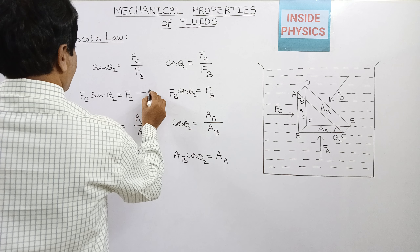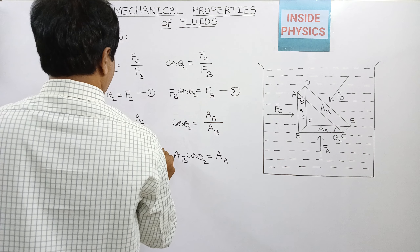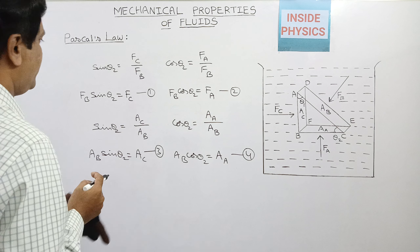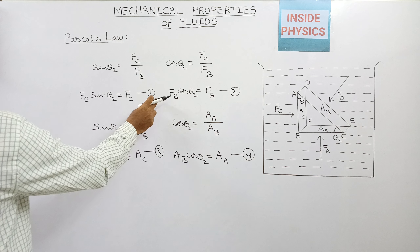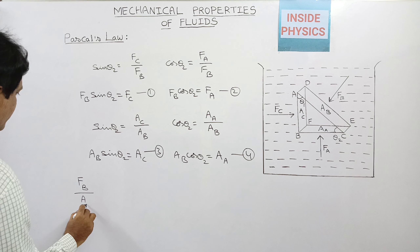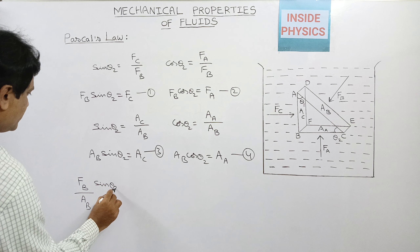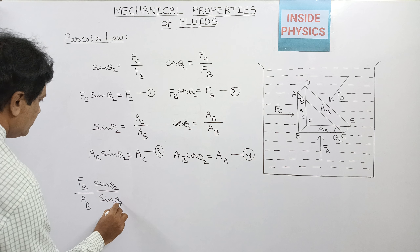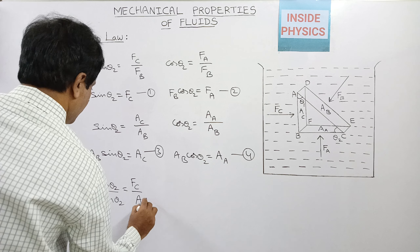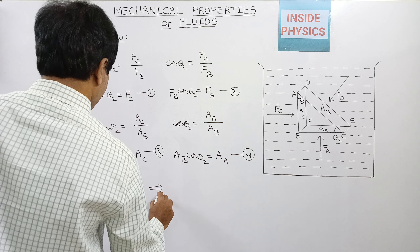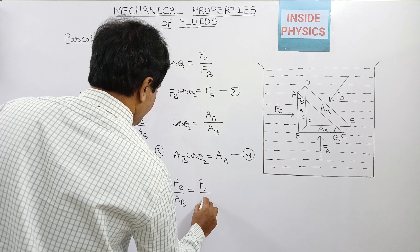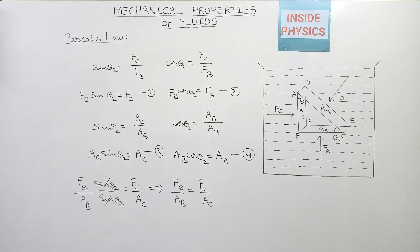Label these as equations 1, 2, 3, and 4. Dividing equation 1 by equation 3: (F_B × sin(theta_2)) / (A_B × sin(theta_2)) = F_C / A_C. The sin(theta_2) terms cancel, giving F_B / A_B = F_C / A_C. This is equation 5.